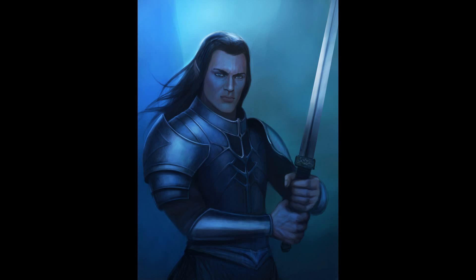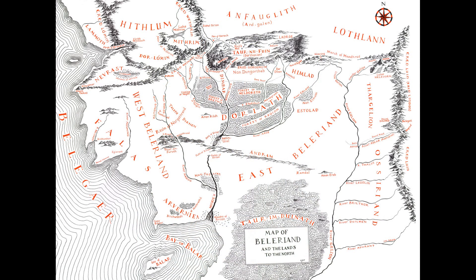Ulmo assisted Turgon in the creation of Gondolin. Before Turgon and his people ever make it to Gondolin, they reside in a place called Vinyamar, which you can see just to the west on the map in Nevrast — the region of Nevrast. Vinyamar is their city, their dwelling, their tower, and this is where the people of Turgon reside. But through the will of Ulmo and Turgon's desire to build a grand city, they come upon the hidden vale of Gondolin.